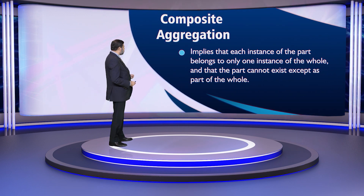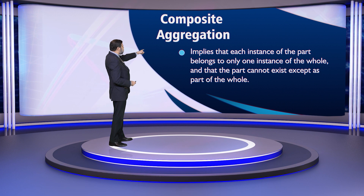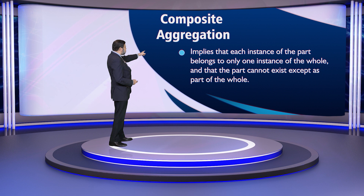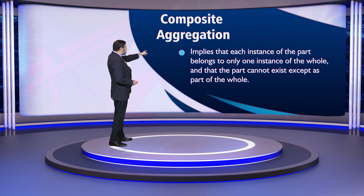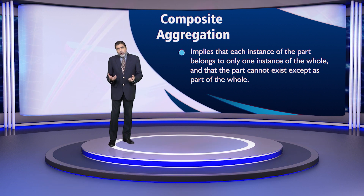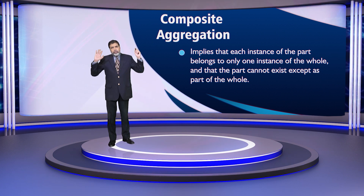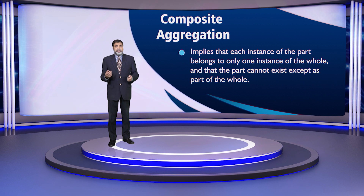Jab hum composition ko system mein use karte hain, iska matlab yeh hota hai that each instance of the part — there is still a whole-part relationship, remember it is an aggregation — so each instance of part belongs to only one instance of the whole, and the part cannot exist except as part of the whole. Kisi whole ka hissah alag se koi cheez nahi hain. Is par hum zara detail mein, implementation ki baat karenge ke kaise isko implement kiya jaata hai.